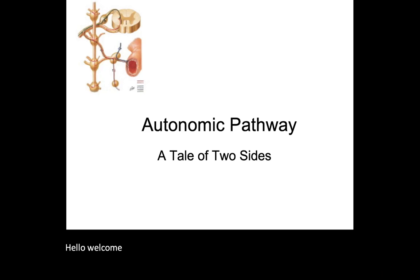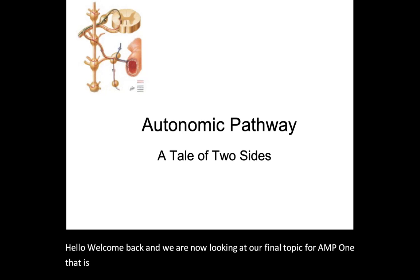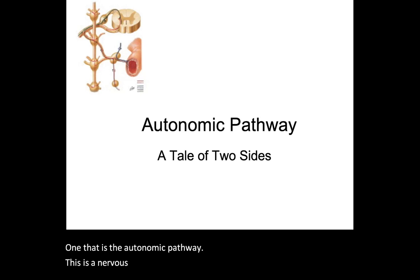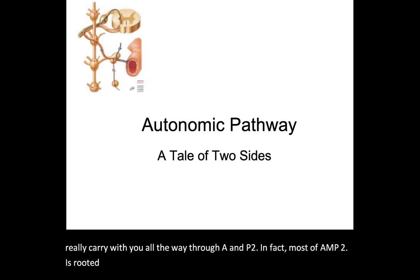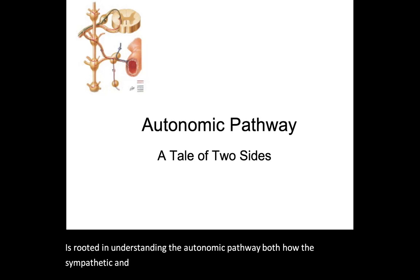Hello, welcome back. We are now looking at our final topic for AMP1, that is the autonomic pathway. This is a nervous system — or part of the nervous system — that is going to carry with you all the way through AMP2. In fact, most of AMP2 is rooted in understanding the autonomic pathway, both how the sympathetic and the parasympathetic nervous systems regulate your other body systems, your cardiovascular system,